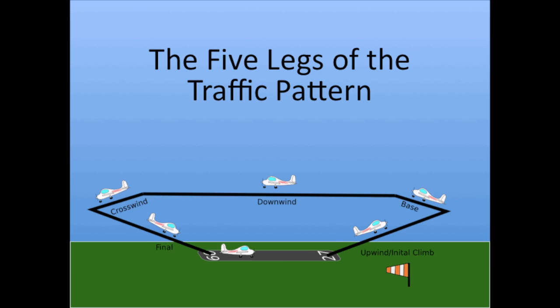The traffic pattern is done by making turns to the left whenever possible, as shown here. This is because the pilot in command of a fixed wing aircraft usually sits on the left, giving him or her better visibility in the turns. However, there are times when this is not possible due to terrain, ground obstacles, restricted airspace, or other hostile sources. In this case, the traffic pattern will be done with right turns. Kind of logical, isn't it?